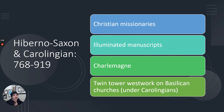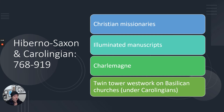From the Hiberno-Saxon and Carolingian peoples we have Christian missionaries, which are very influential in spreading not just the Christian religion but also cultural heritage and information. We have Charlemagne, who does a lot of conquering and uniting. We also have the development of the Twin Tower West work on Basilican churches under the Carolingians, which is very influential in the way that churches are going to look for the rest of Western art history.